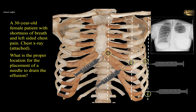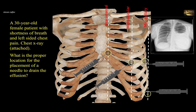A 30-year-old female patient presents with shortness of breath and left-sided chest pain. The chest X-ray shows the presence of a fluid level — a pleural effusion on the left side. What is the proper location for needle placement to drain the effusion? You can see vertical planes: just to the side of the sternum, at the mid-clavicular line, and at the mid-axillary line. The needle should be inserted in a place that has pleura, specifically the lower part of the pleura, but no lung, to avoid penetrating the lung.